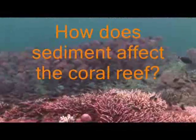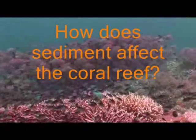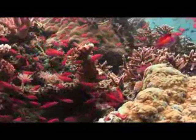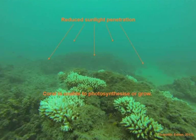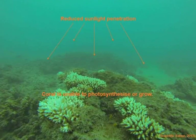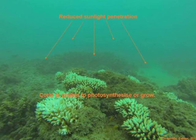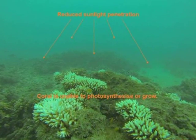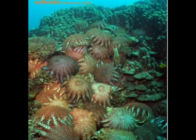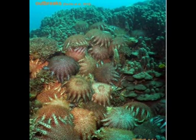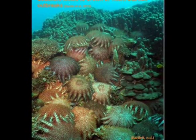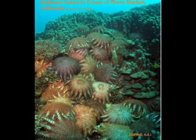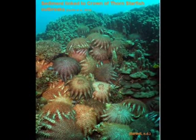Increased sediment levels decline the water quality on the Great Barrier Reef, which has a direct impact on coral by reducing sunlight penetration and smothering the coral, as coral requires sunlight in order to photosynthesise. Increased sediment also contributes to a build-up of pollutants on the reef and attributes to higher algal growth, which leads to reduced coral growth and ultimately less coral diversity.